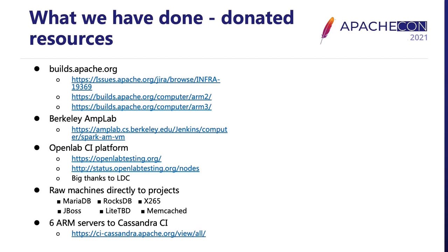We have also tried to promote ARM CI in the Spark community and provided an ARM server to Berkeley and PNAP, which Spark CI runs on. We also have a self-maintained CI infrastructure named OpenLab. We have added ARM resources to OpenLab to run ARM CI tasks, and it is open for every open-source project's integration. Additionally, we have directly donated ARM servers to open-source communities such as MariaDB, LogsDB, and Memcached. Recently, we also provided six ARM servers to the Cassandra community to help them build ARM CI.